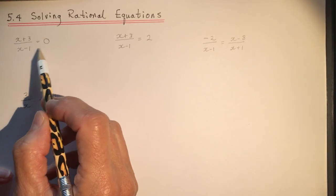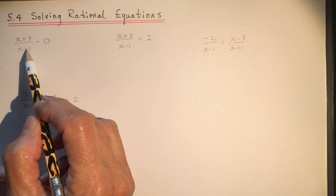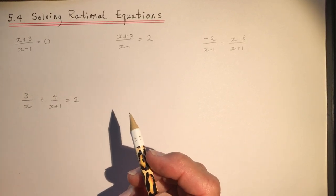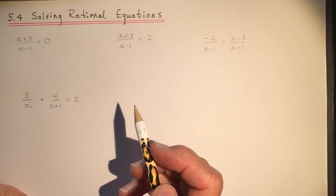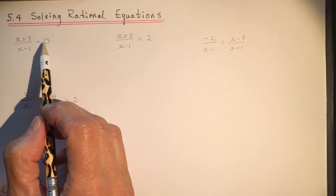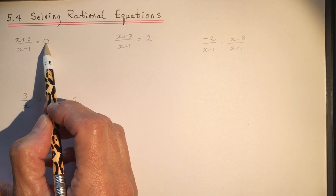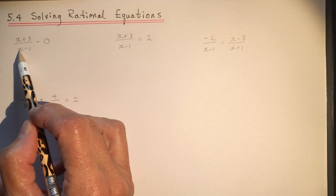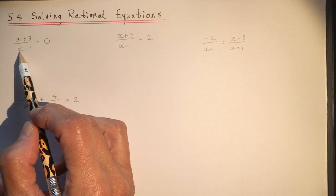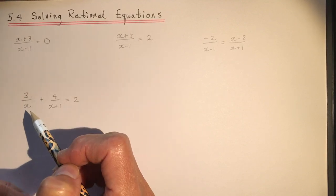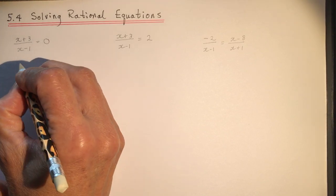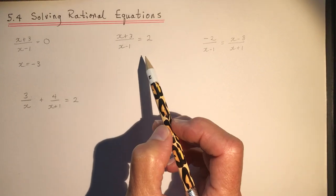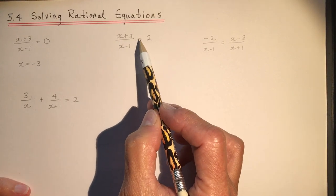The easiest one: if (x+3)/(x-1) = 0, what is x? From working with rational expressions, this is like finding the zeros of a function or the x-intercepts — you look to the numerator. This has a vertical asymptote at x=1. What makes the numerator 0? Negative 3. So x = -3. As easy as that. In the second example, however, we don't have it set equal to 0.